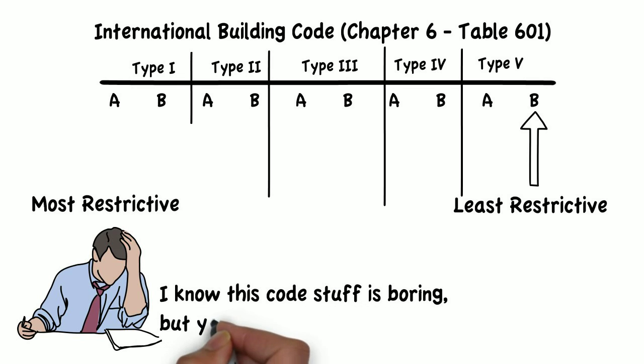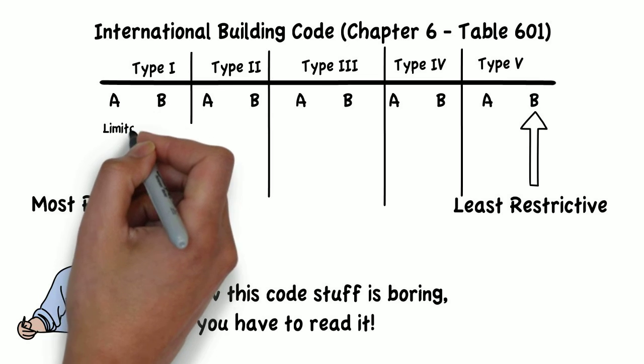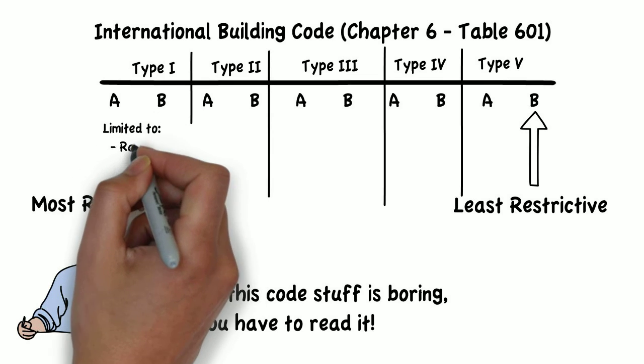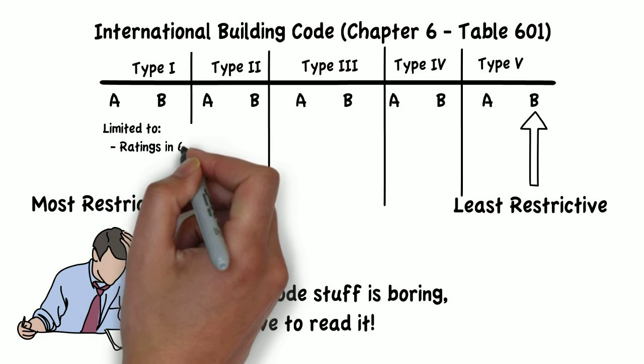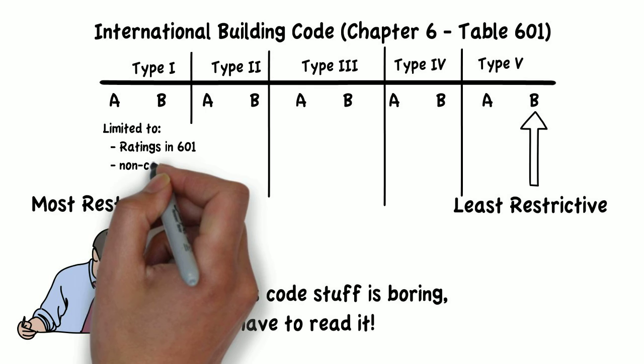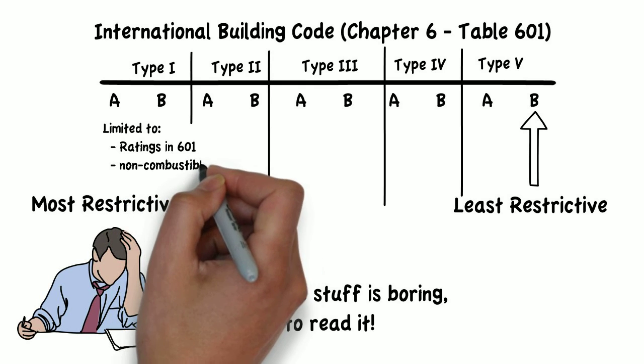In a nutshell, IBC Section 602.2 tells us that Type 1 and Type 2 buildings are those whose construction is composed of the ratings in Table 601 and limited to non-combustible materials.